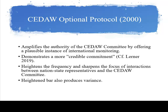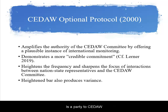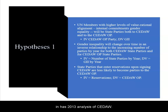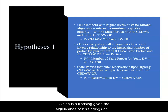Finally, the heightened bar of the CEDAW Optional Protocol produces variance, whereas nearly every nation state is a party to CEDAW. As we saw earlier, fewer states — 54% — are parties to the Optional Protocol. Wade Cole did not include the Optional Protocol as a critical predictor variable in his 2013 analysis of CEDAW, which is surprising given the significance of his findings on optional protocols in his two earlier studies of different UN conventions.